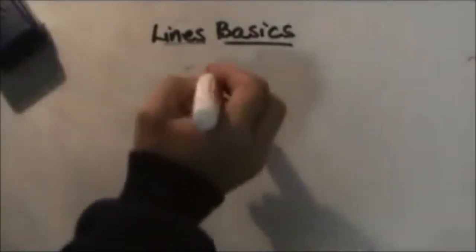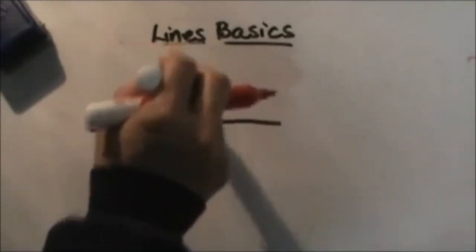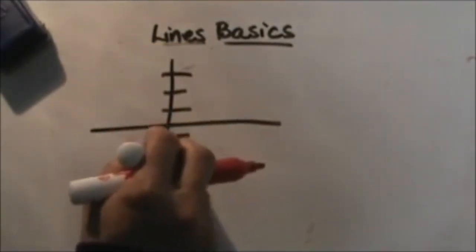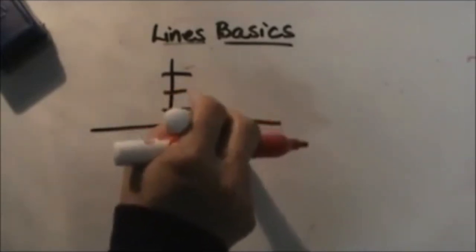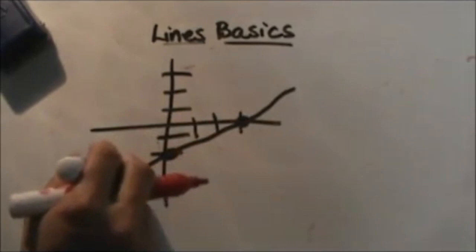That one's a little bit tight, so let me erase and do one more example. So here is our Cartesian coordinate plane, and we'll put a value this time down here, and up here, and draw our line.